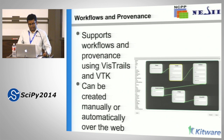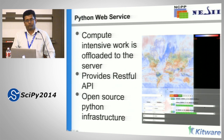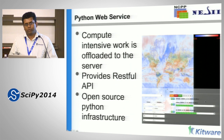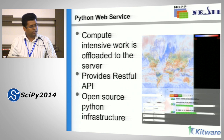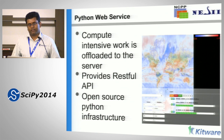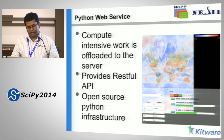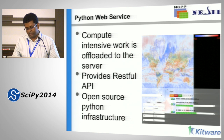One thing to mention is data download. If data is not served by OpenDAP or some other remote protocols, we actually download the data on the server using Python's Celery framework. We initiate a Celery task, which can spawn as many processes as needed, and it downloads data in the background while you can still do things on the GUI—like analysis or visualization—without being blocked by the other processes.